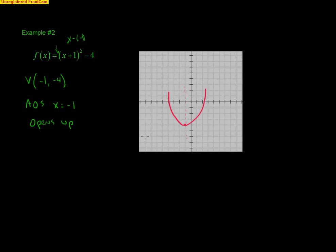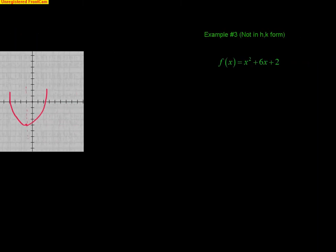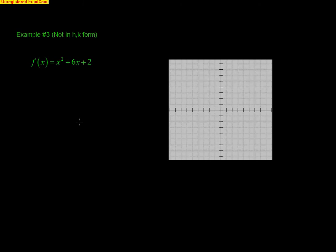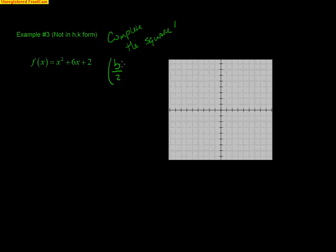Now the question becomes: what happens if the equation is not in HK form? When it's not in HK form, what we have to do is complete the square, and by doing that, we put it into HK form. To complete the square, you take the middle term b, divide it by 2, and square it.